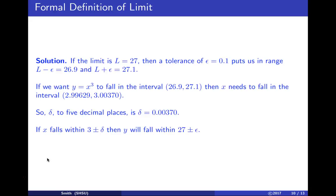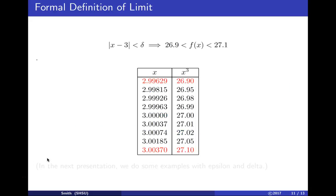So if x falls within 3 plus or minus delta, y will fall within 27 plus or minus epsilon. That means as x approaches 3, y approaches 27.